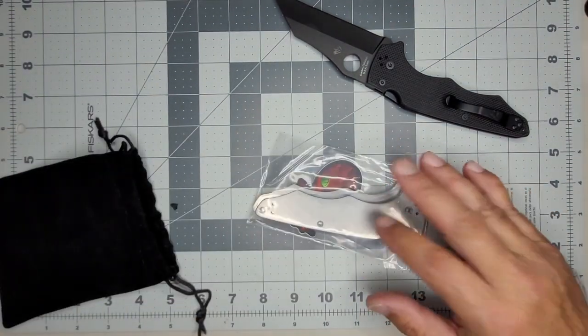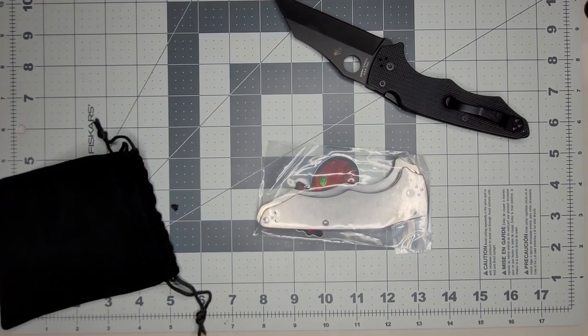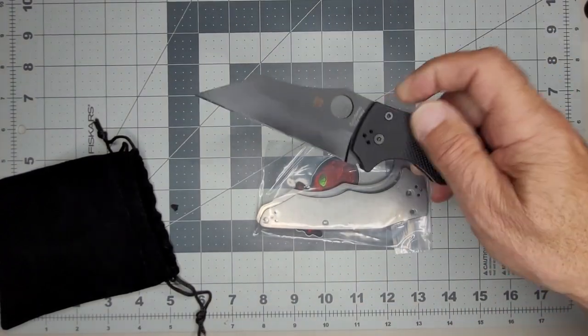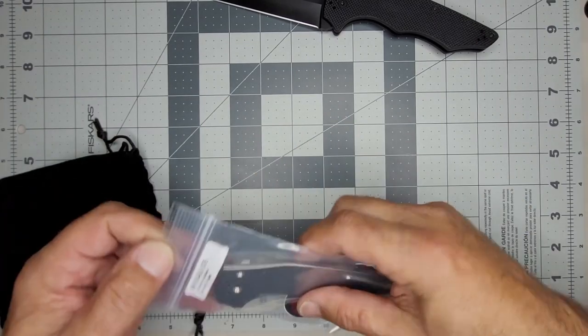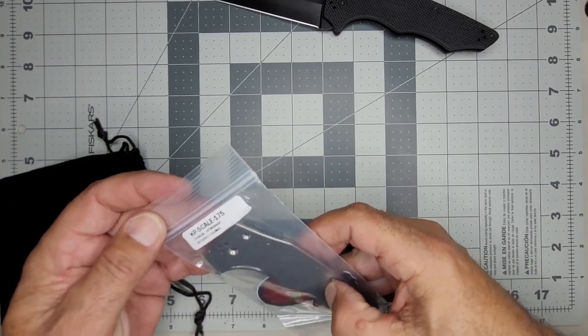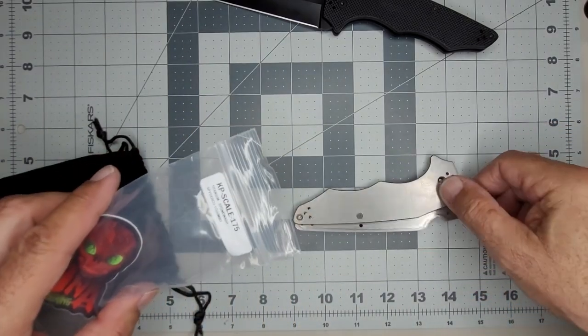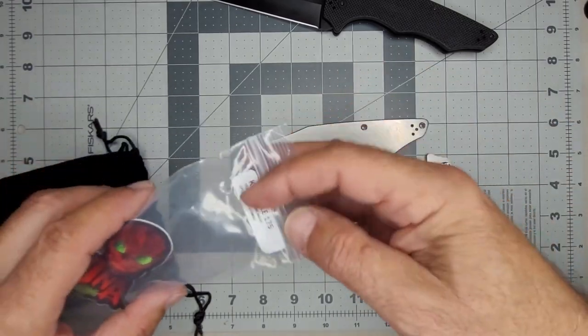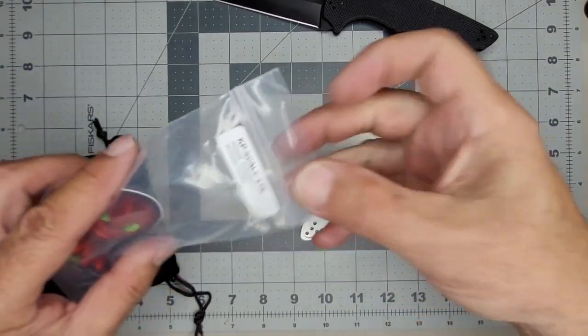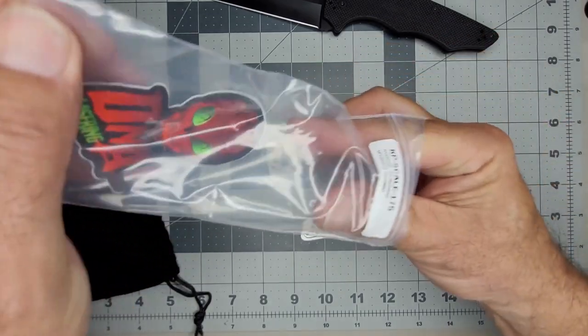All right, so what do I have here? Beautiful scales. DNA Lasering. I got this on ST, I think it's called. You know there's not a ton of scales out there for this, and the ones that were there I just didn't like. I tend to like a smooth scale, a smooth surface in my hand, it just feels good to me. Oh look at this DNA Lasering, I like this.